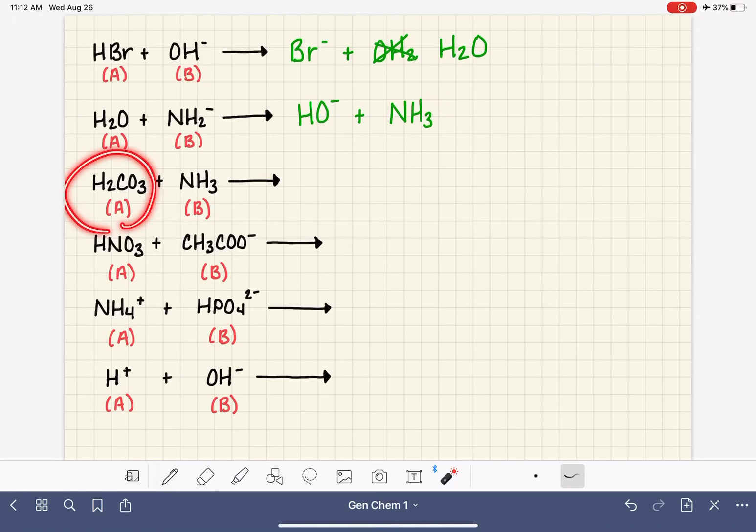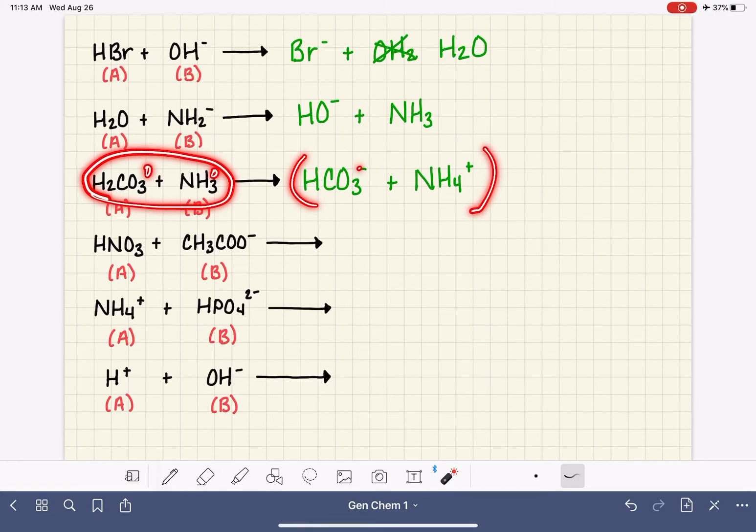Here's our next example. H2CO3 is the acid. So it will lose a hydrogen. It will become HCO3-, and NH3 is our base, which means it accepts a hydrogen. So it becomes NH4, and it also picks up that positive charge. Here's a good example of us being able to use the conservation of charge. So on the initial side, we have a total charge of zero. And then on the product side, we have a minus one plus one, which is a total charge of zero.